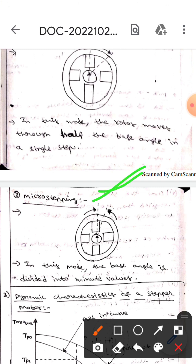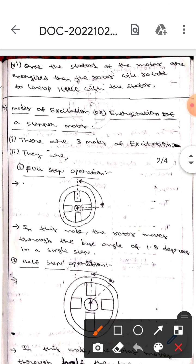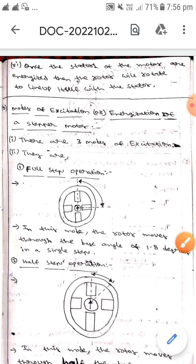...micro stepping. This diagram represents micro stepping. In this mode, the base angle is divided into minute values. This is all about the modes of excitation and energization of stepper motor. I hope you understand. Thank you.